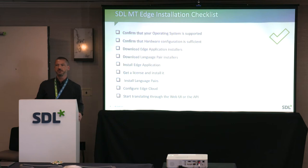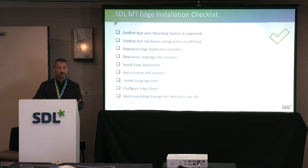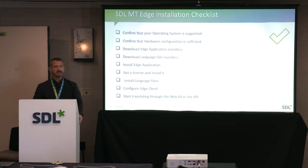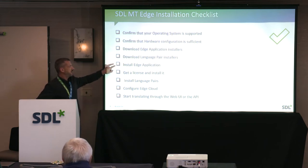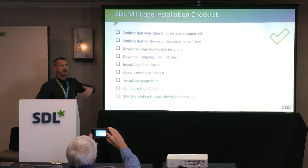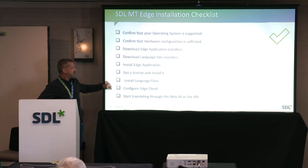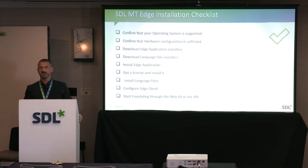Before installing Edge, confirm your operating system is supported — don't install it directly on a Mac. Verify you have enough hardware, download the installers, and if you want local language pairs, download those installers too. A critical step is getting a license — by default Edge installs without one so nothing will start. You get a license, install it, then install your language pairs, configure Edge Cloud, and you can start translating immediately.